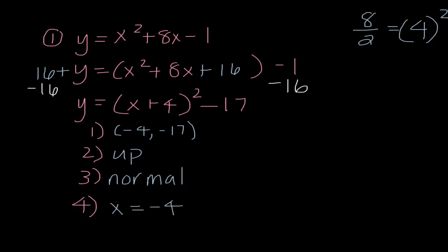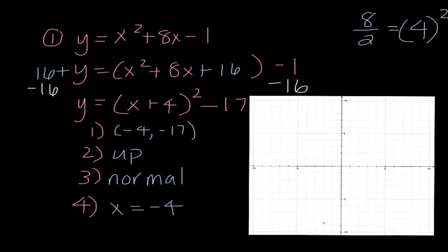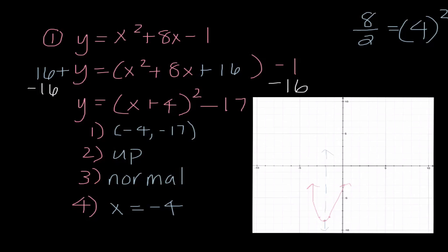On my graph, each unit is worth 2, so I went left 4 and down 17 to plot the vertex. Since it's up and normal, I go up 1 and over 1 in each direction, then draw the U and the line of symmetry. Just to recap: bump the constant over, factor out the leading coefficient, create a perfect square trinomial by taking the middle coefficient, dividing by 2, squaring it, and adding it to both sides. Then factor and isolate y by subtracting that constant to both sides.